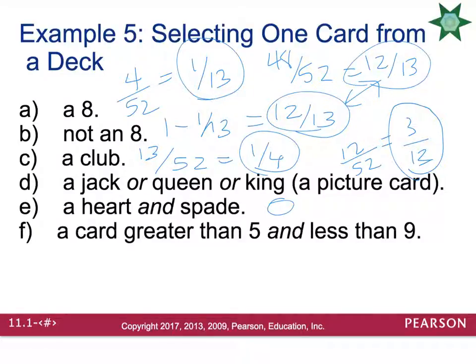What is the probability of a card that is greater than 5 and less than 9? So numbers that are bigger than 5 and less than 9 would be 6, 7, and 8. So there's three numbers.